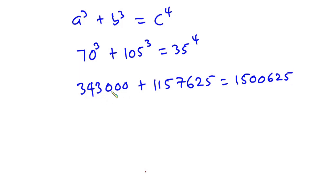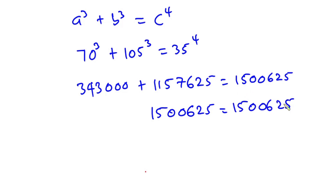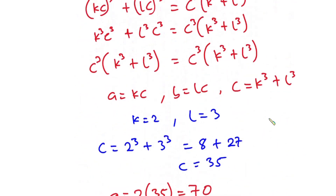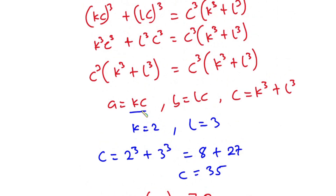If you sum 343,000 and 1,157,625, you get 1,500,625, which is exactly equal to 35 to the fourth power. So the left hand side equals the right hand side. We can conclude that a equals kc, b equals lc, and c equals k to the third power plus l to the third power. You can test your own values, but make sure k and l are not equal and must be greater than one.